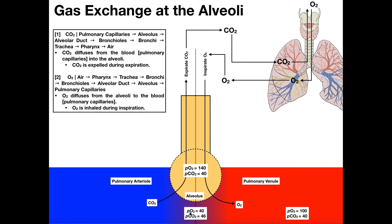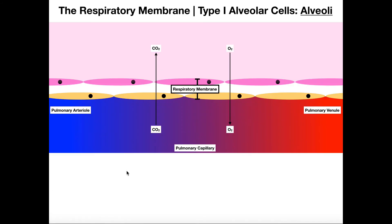What I want you to notice is this: if we compare the PO2 and PCO2 values at the pulmonary capillaries before exchange occurs to the contents of the pulmonary venule — which ends up being the contents of arterial blood — notice that CO2 really didn't drop all that much. It just goes from about 46 down to 40. However, if we look at oxygen, it spikes up. The PO2 in the pulmonary capillaries before gas exchange is about 40, but in the arterial blood — before it delivers any oxygen to tissues — it's going to be about 100, which is a jump of about 60.